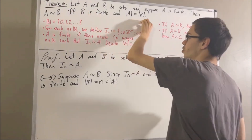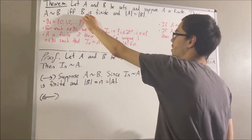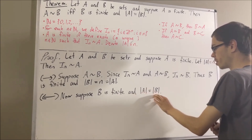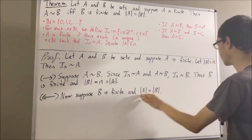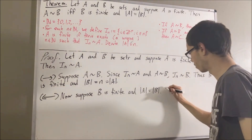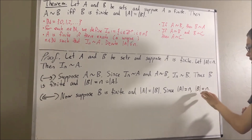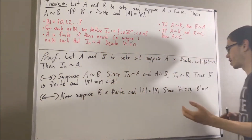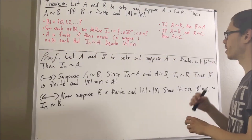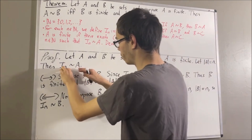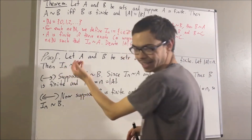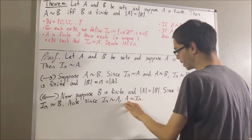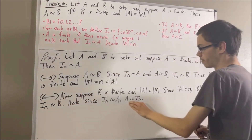Now let's prove the other direction. Suppose B is finite and the number of elements in A equals the number of elements in B. Since the number of elements in A is equal to n, it follows that the number of elements in B is also equal to n. This means n is the unique natural number which satisfies this condition, so there's a bijection from I_n to B. Since there's also a bijection from I_n to A, we can flip that to say there's a bijection from A to I_n. Using our second fact regarding bijections, since there's a bijection from A to I_n and from I_n to B, it follows that there's a bijection from A to B.